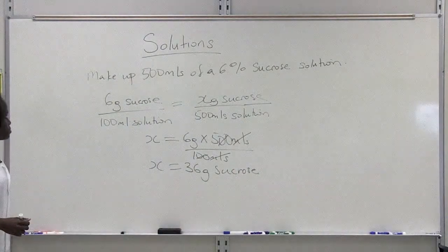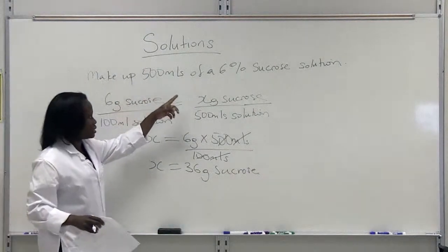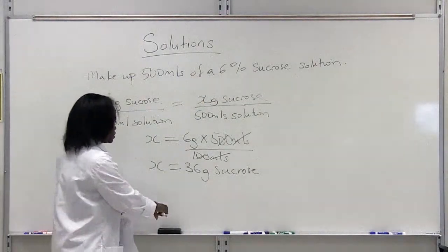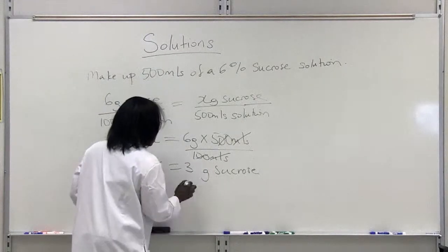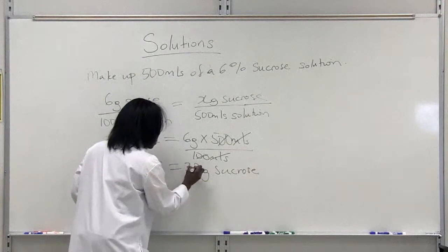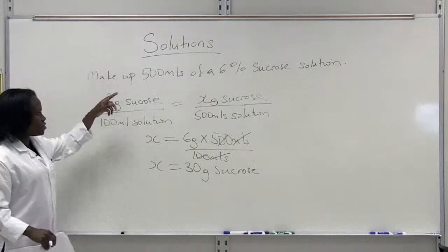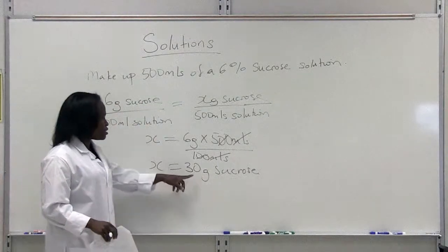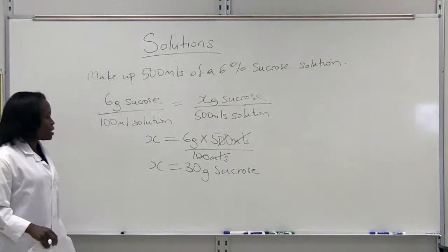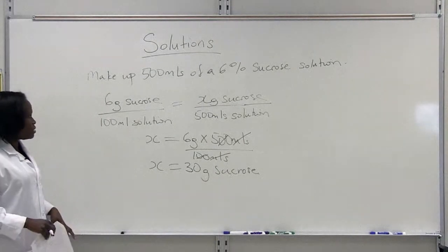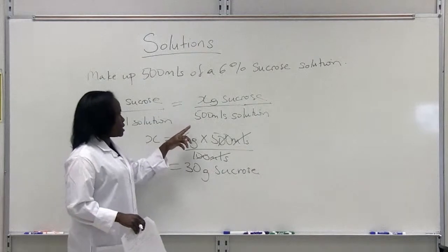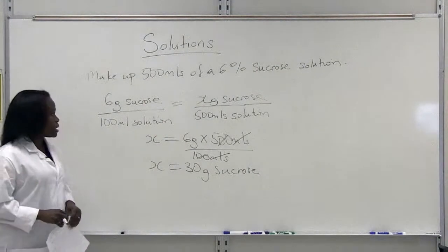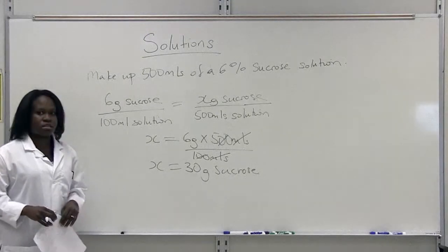So if I'm going to make up 500 mls of a 6% sucrose solution—sorry, this is 30, not 36—I need 30 grams of sucrose. I'm going to dissolve that in water and then bring the volume up to 500 mls. That is how you would make up 500 mls of a 6% sucrose solution.